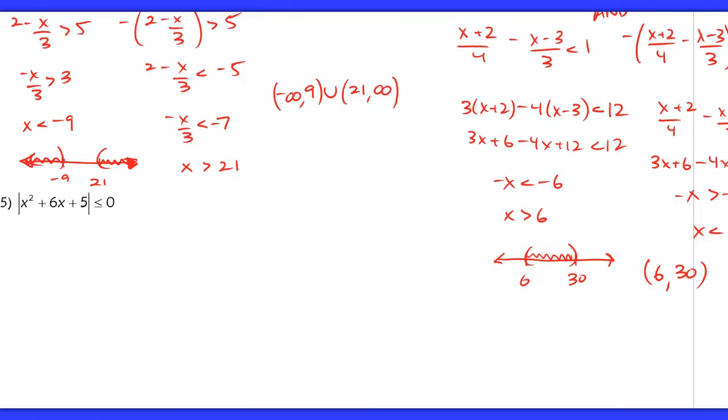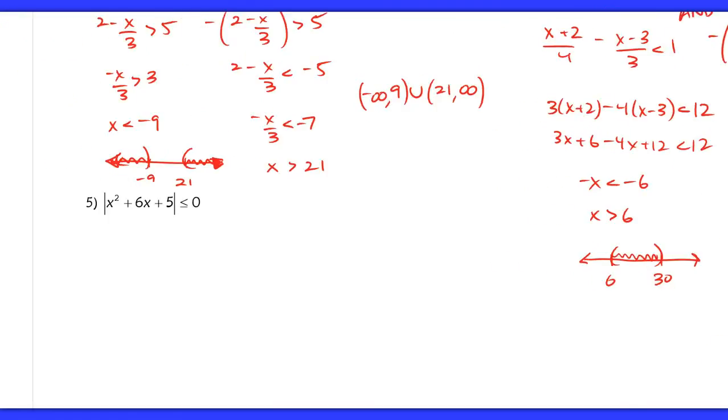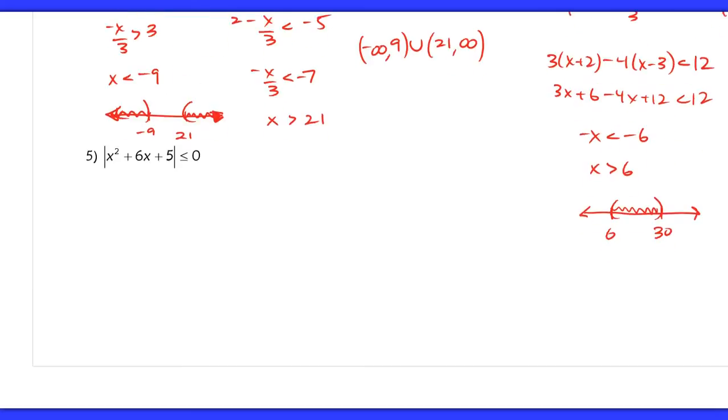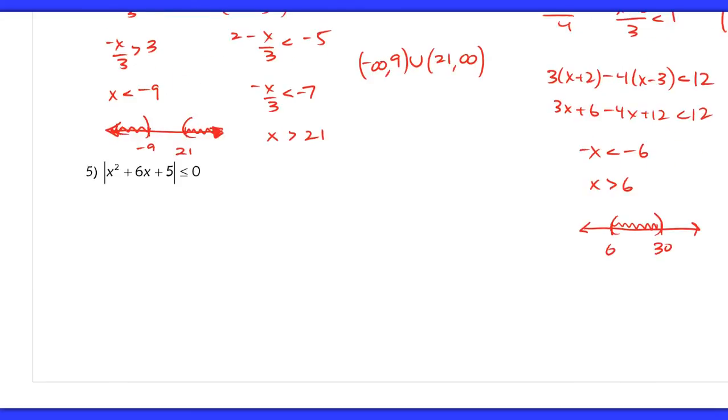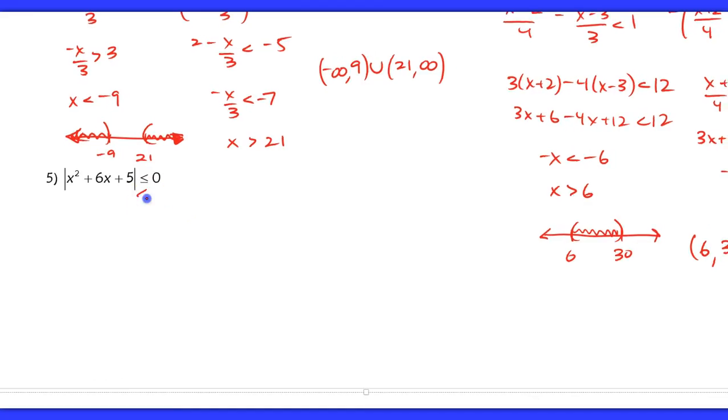Alright, now problem number 5. This is another thinking question that's really similar to the one that we did yesterday in part 2 of other equations. So it says the absolute value of something is less than or equal to 0 here. So you've got to think about this in terms of whether or not this is possible. So if this is less than 0, then this inequality is impossible. You can't have the absolute value of anything being less than 0, right, because the absolute value changes to positive.